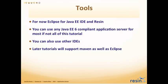This tutorial is going to use Eclipse for the Java EE IDE, and it's going to use Resin for the Java EE6 web application server. You could use any Java EE6 compliant application server — the source code will work the same. You could use any IDE. We focus on Eclipse because it is so pervasive and the tools are free. The Resin Java EE application server is also open source, has plug-ins for Eclipse, and supports the Java EE6 web profile.